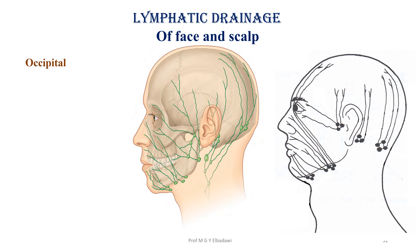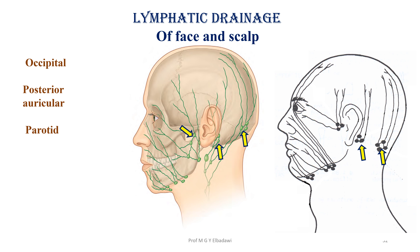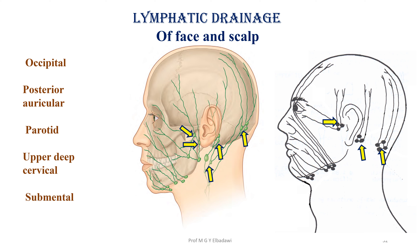The lymphatic drainage groups are the occipital, the posterior auricular, the parotid group, and the upper deep cervical. The submental nodes drain to the submandibular nodes, and the submandibular nodes end in the upper deep cervical. That's all about the face and scalp.